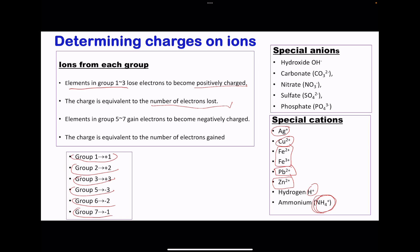For the special anions, these include the hydroxide, the carbonate, the nitrate, the sulfate, as well as the phosphate. You have to remember those.